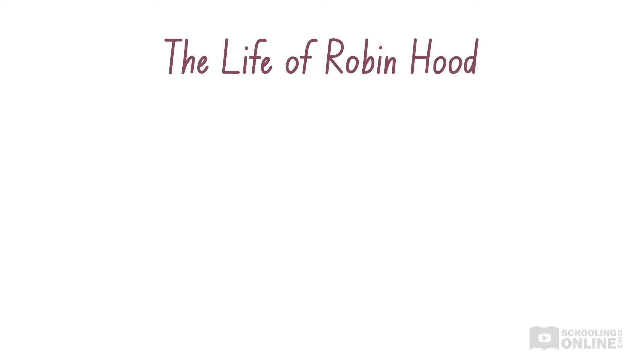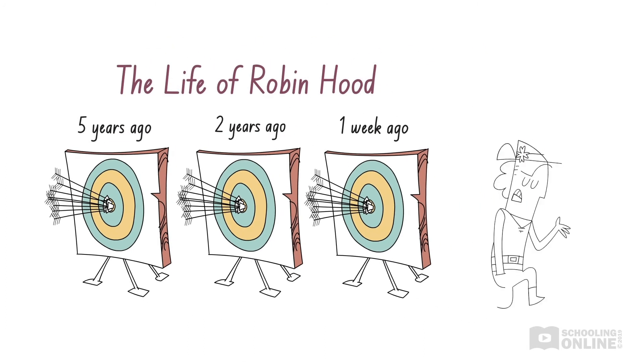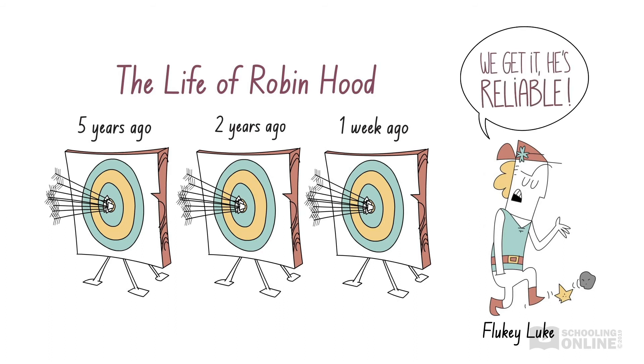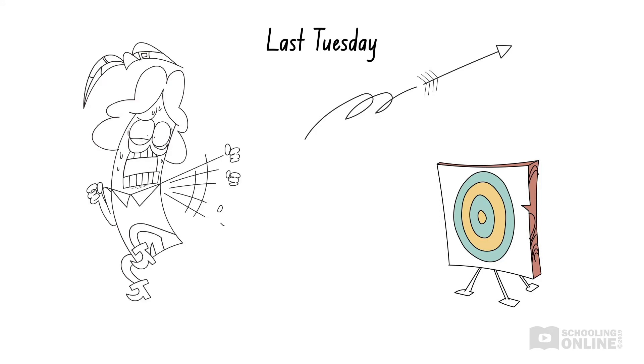For example, let's consider Robin Hood's archery history over the past five years. As expected, the overwhelming majority of his shots land in the bullseye. But what's this? He completely missed the target during practice last Tuesday. This looks like an outlier. We have to find some way to justify this poor performance on Robin Hood's behalf.